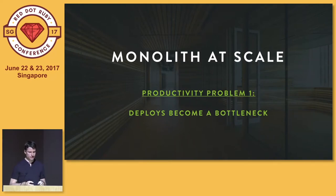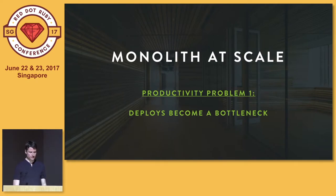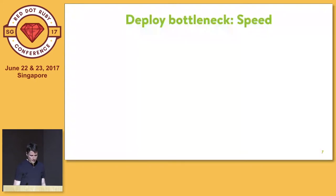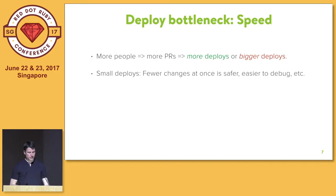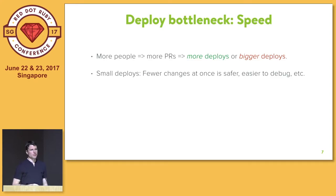I want to frame this talk from the perspective of productivity problems. The first one is deploys. If you have this many people working on the same code and they all want to deploy, deploys actually become a bottleneck. If you hire more people, they want to ship more code, and that means you either need to deploy more often or have bigger deploys. Smaller deploys are often better — fewer changes are easier to debug, safer, easier to roll back, and easier to keep an overview of.